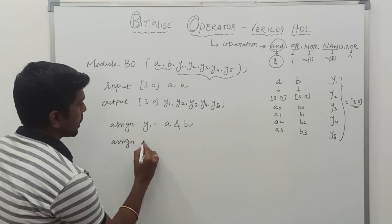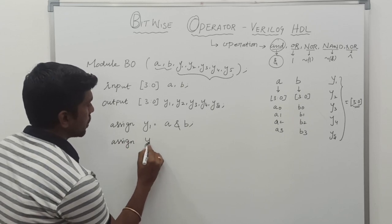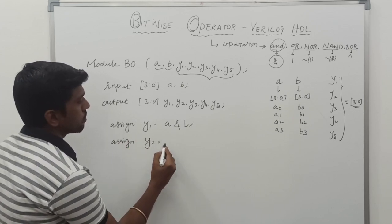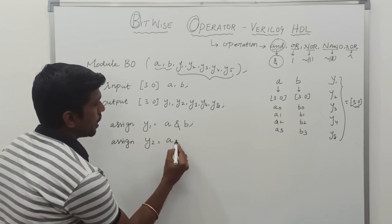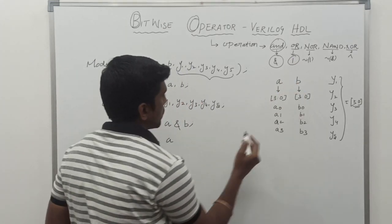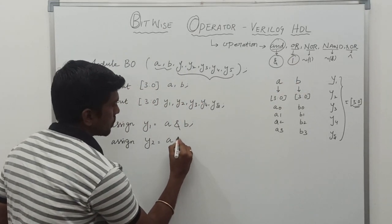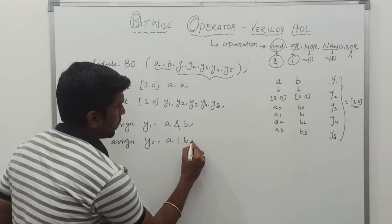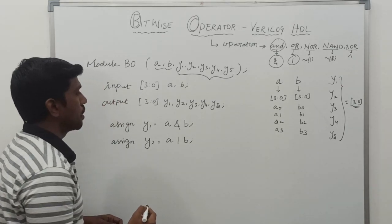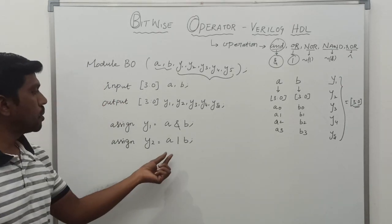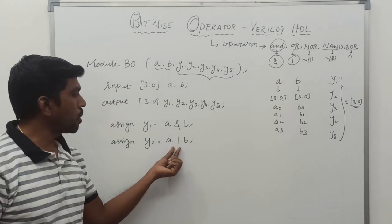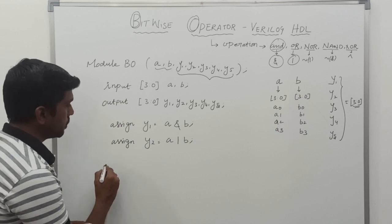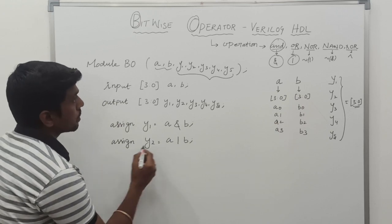The second operation is OR operation. You can use: assign Y2 equal to A, then the OR symbol, then B. So the output of OR is stored in Y2 variable.